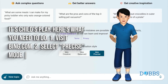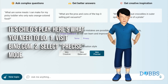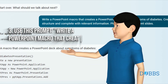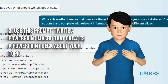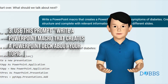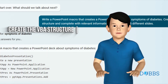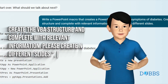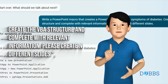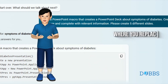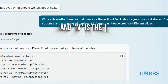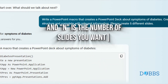Step 1: Visit bing.com. Step 2: Select precise mode. Step 3: Use this prompt — write a PowerPoint macro that creates a PowerPoint deck about your topic. Create the VBA structure and complete with relevant information. Please create in different slides, where you replace 'your topic' with your topic or subject matter, and 'n' is the number of slides you want.